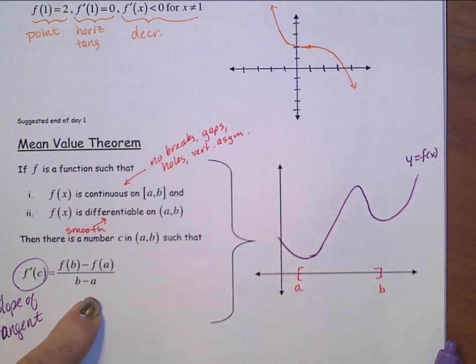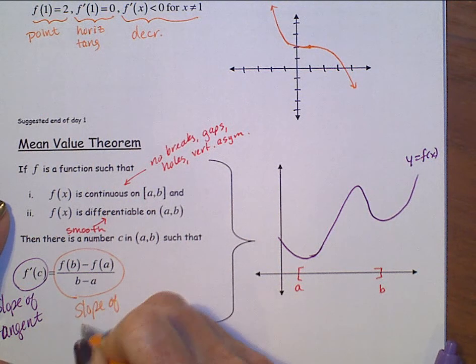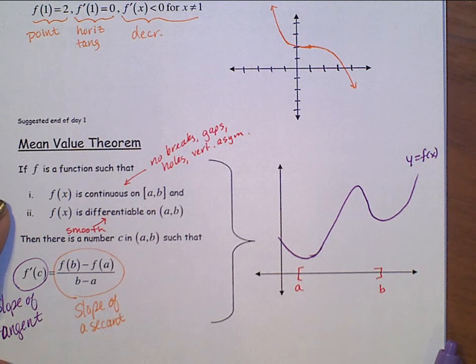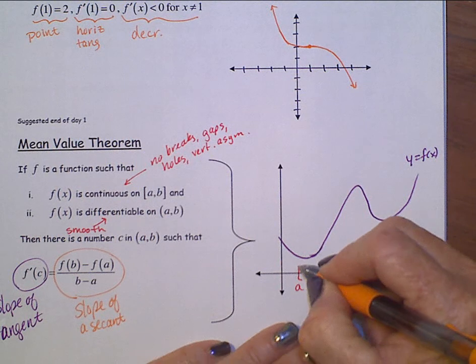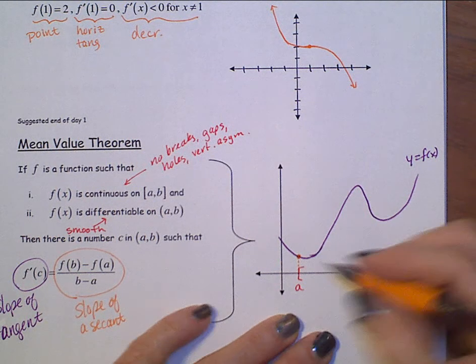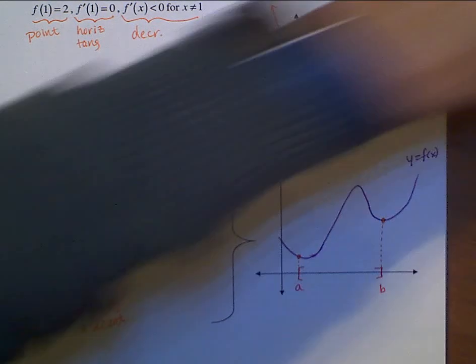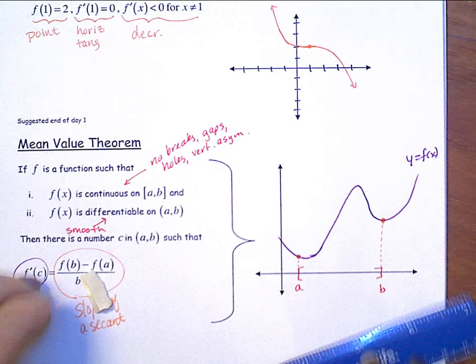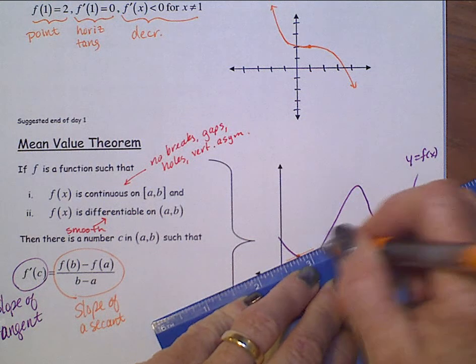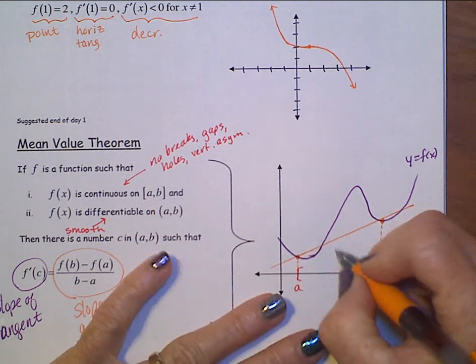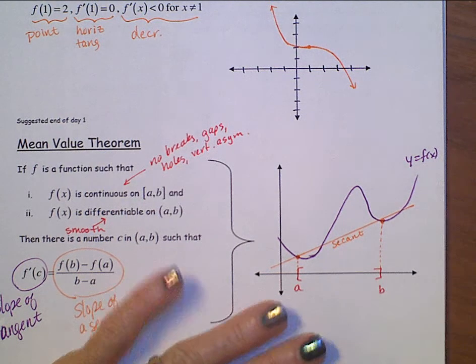Do you recognize that? That's slope of a secant line. So, let's find that secant. So, we'll take a up to where it hits the function. Take b up to where it hits the function. Find the slope of that secant line. Okay.